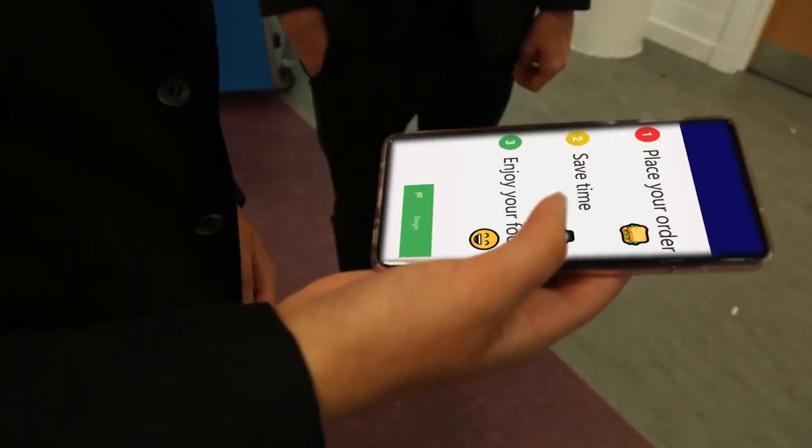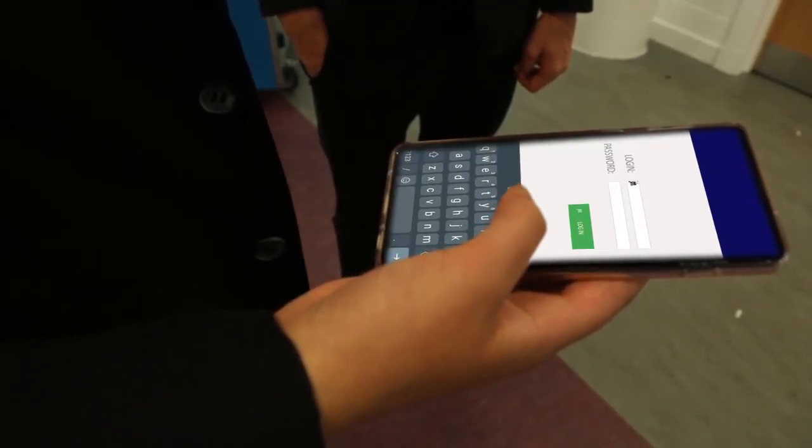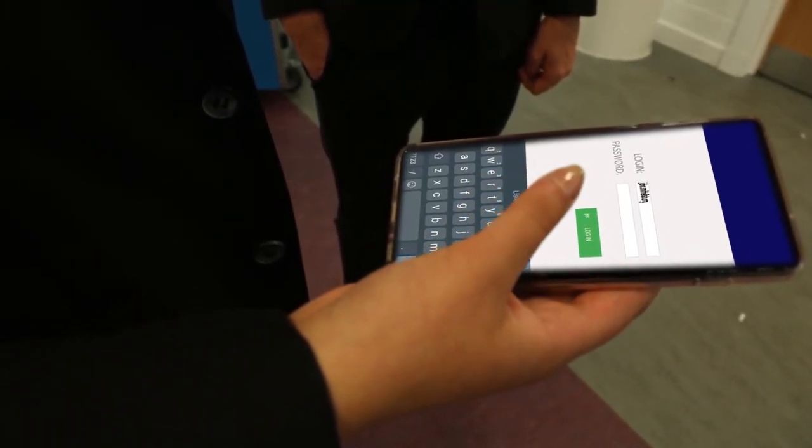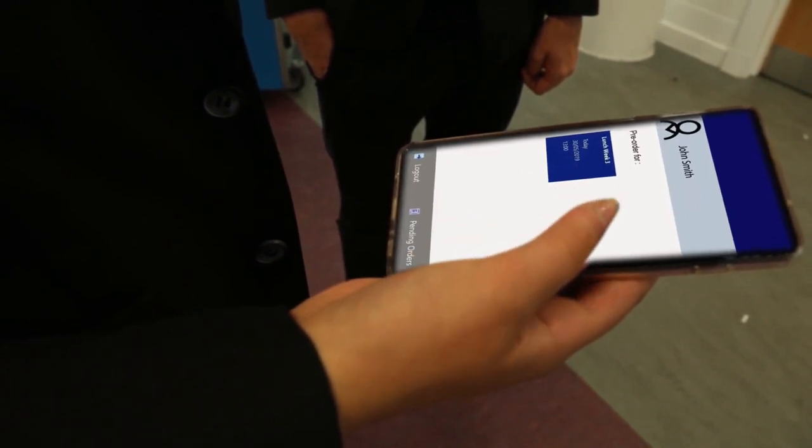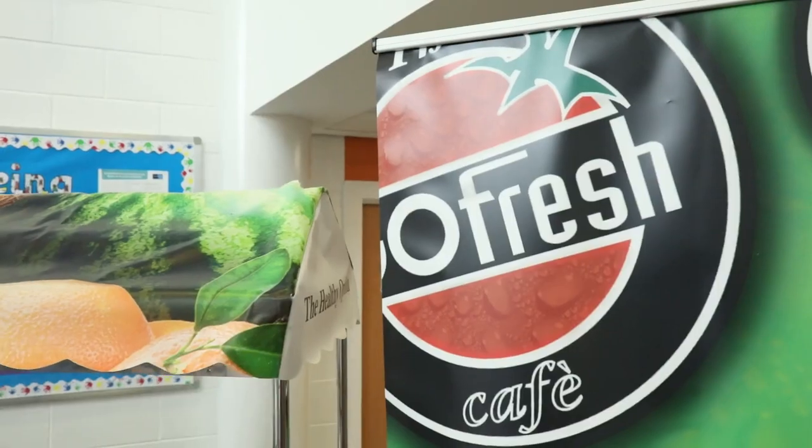Look, I ordered through this new app. Go on, you can see the menu, pick what you want, pay through your account, you can top up at the counter or through parent pay, and your lunch is ready when the bell goes.